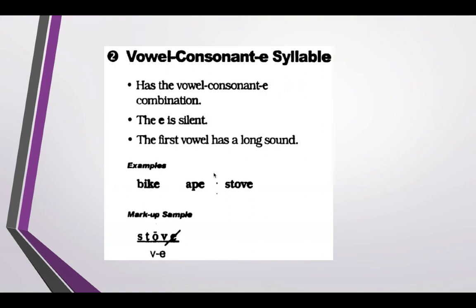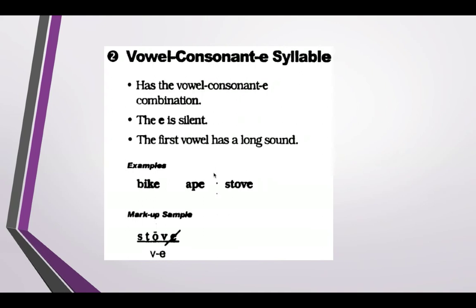There's a vowel-consonant-E syllable. Many of you probably refer to this affectionately as the magic E rule. The E is silent and your first vowel has the long vowel sound. Examples: 'bike,' 'ape,' 'stove.' When marking this, you indicate the long vowel sound with a line over the long vowel, cross out the E because you don't hear the E sound, and it's coded as vowel-consonant-E.